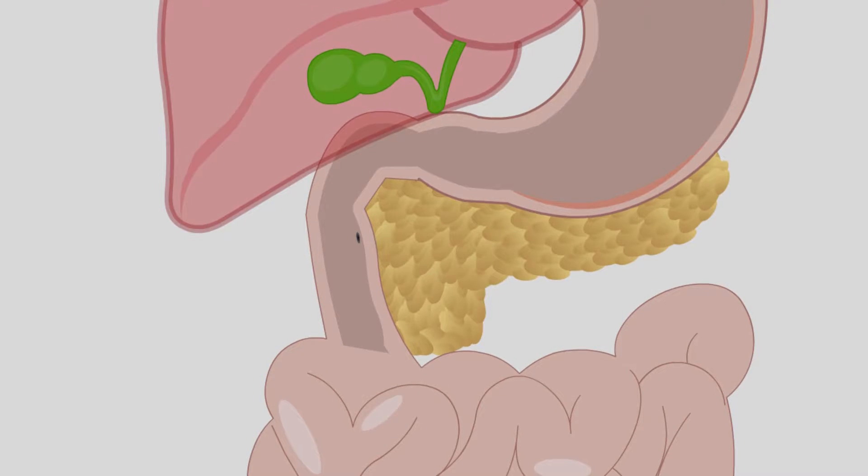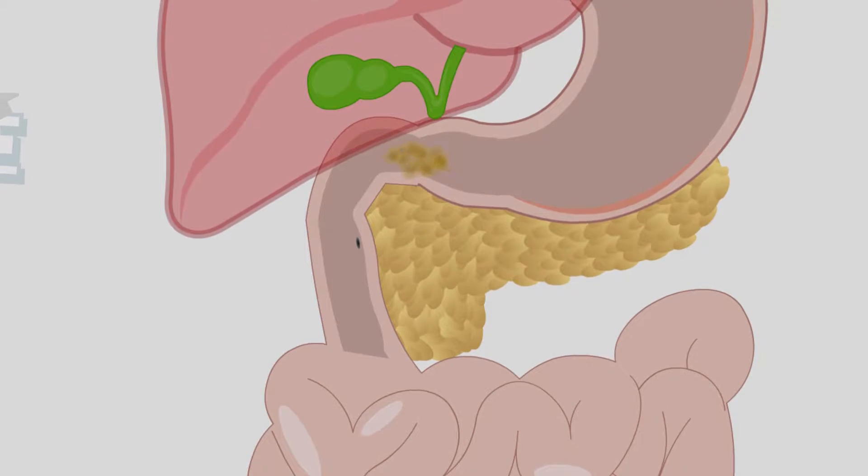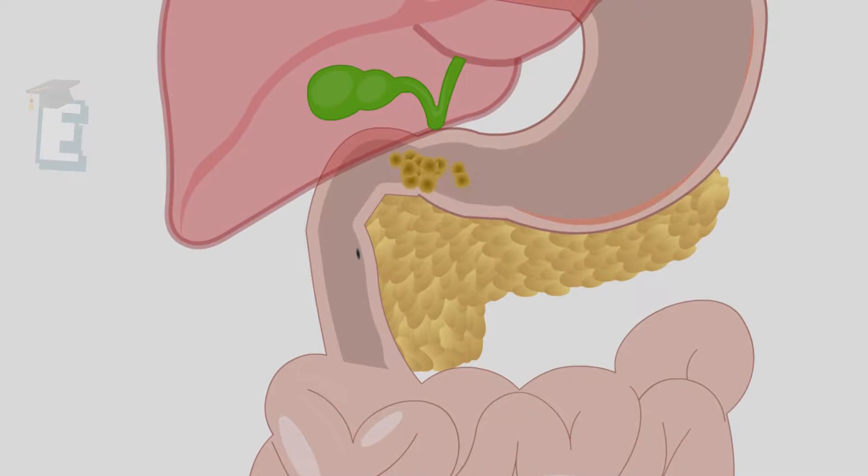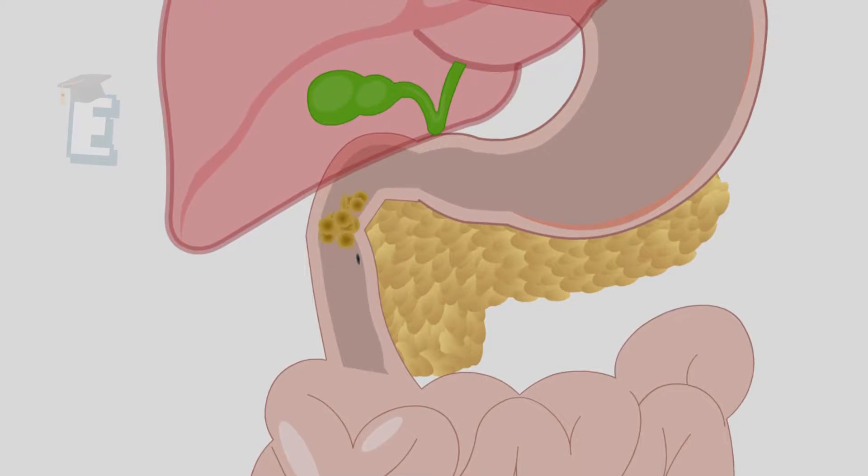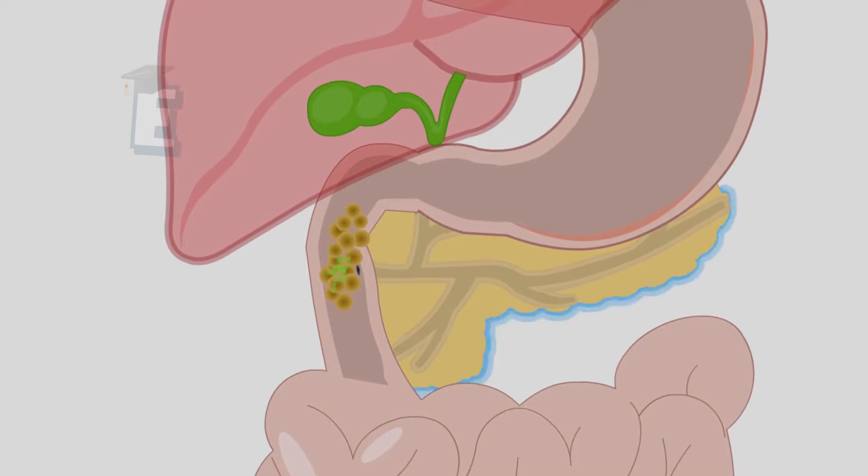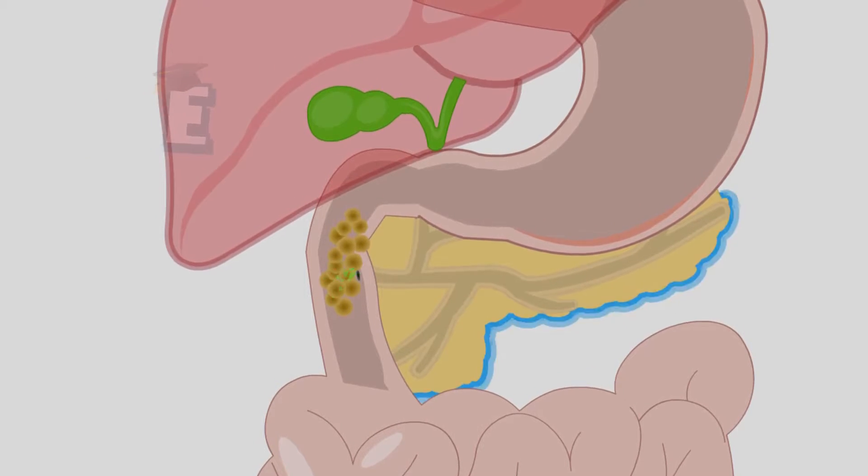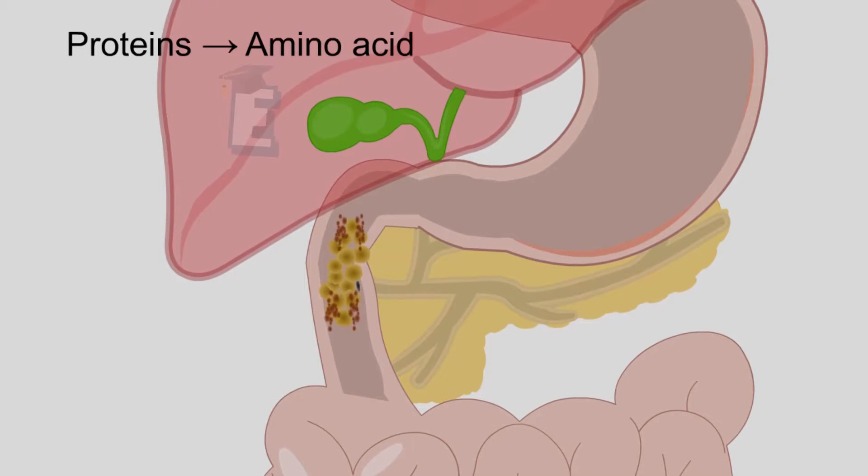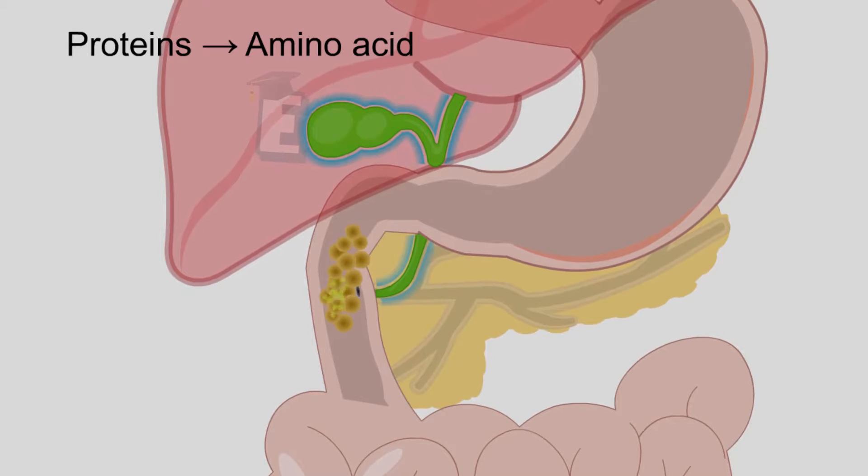The digestion process in the small intestine is only chemical digestion. This process mostly happens in the duodenum. Three chemical substances—namely carbohydrates, proteins, and fats—are digested in this place so they can be absorbed later. Carbohydrates are digested into glucose, proteins are digested into amino acids.